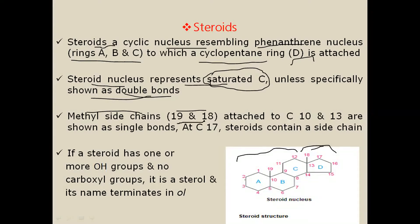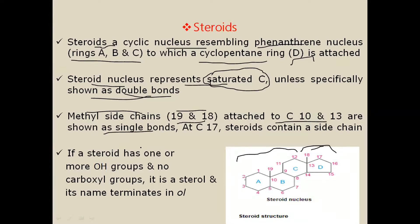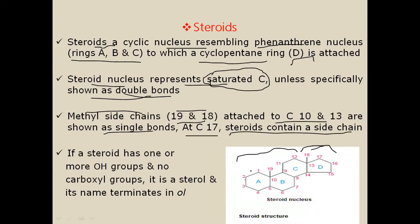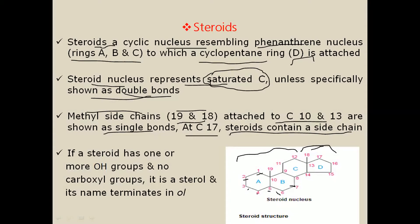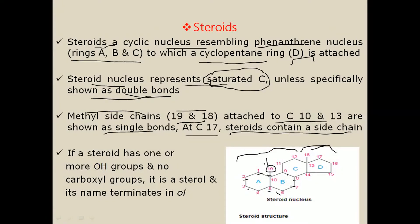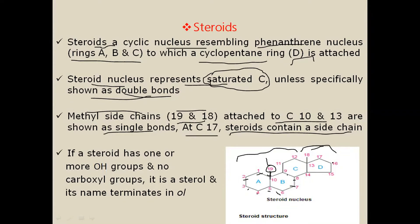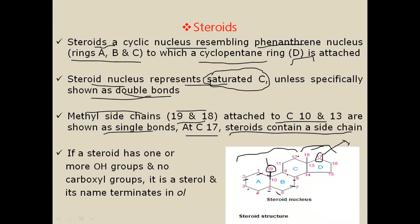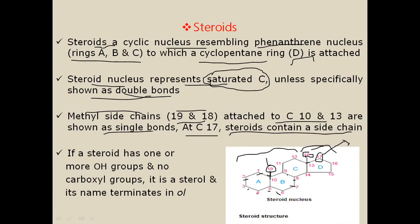The methyl side chains shown as numbers 18 and 19 are attached to carbon 10 and carbon 13 in the ring and are shown as a single bond. At carbon 17 in the ring, steroids contain a side chain. A methyl group at carbon 10 is designated as number 19, and another methyl group at carbon 13 is shown as number 18, both as single bonds.